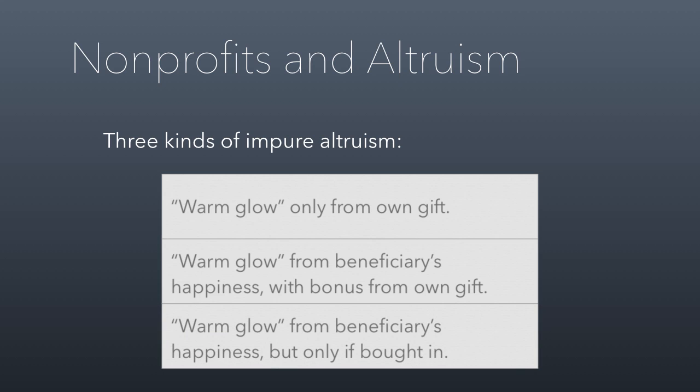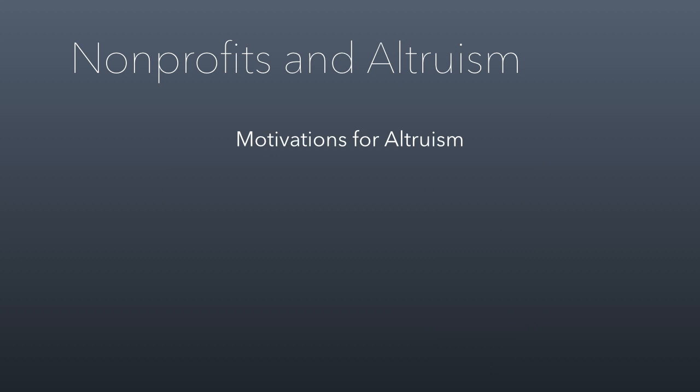A third type of warm glow comes from the beneficiary's happiness but only if the donor has bought in. In this case, a public campaign tells the world what you do, but someone who hasn't donated doesn't really care. However, once they do donate, they feel good because they contributed to the beneficiary's happiness. These distinctions matter for how nonprofits structure their fundraising and outreach campaigns.